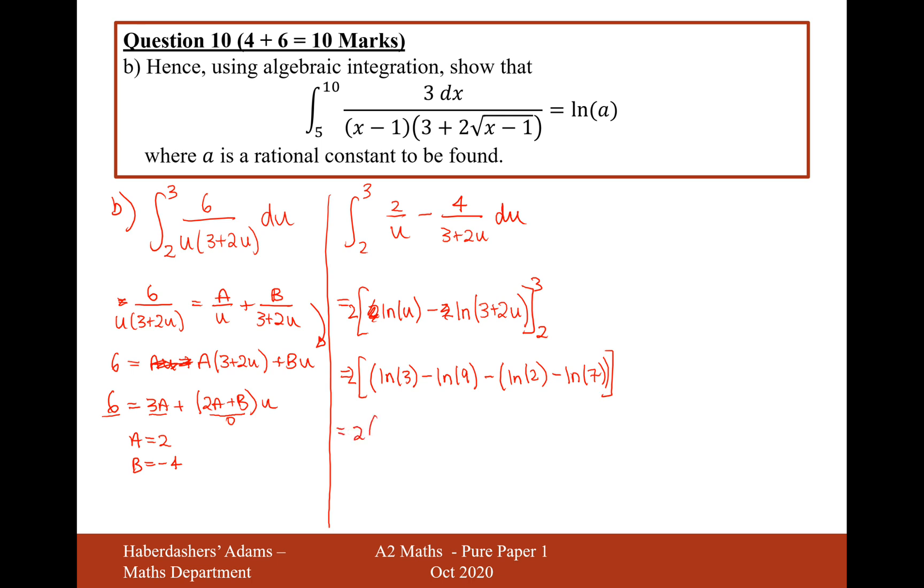So it's going to be 2 times, now I'll group the positive ones together. So ln 3 and ln 7 will make ln 21, and I'll group the negative ones together as well, so that will be ln 18. And now when you're subtracting ln's, you divide them. So it's going to be 21 divided by 18, that simplifies to 7 over 6. And now we'll just incorporate the 2 inside our ln now, so it's going to be ln(49 over 36).